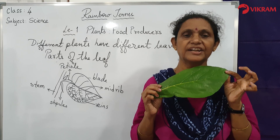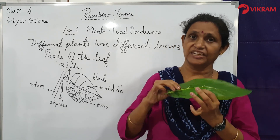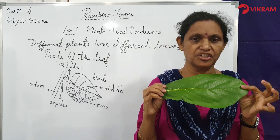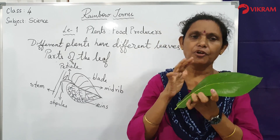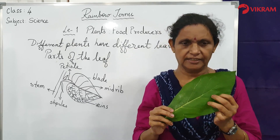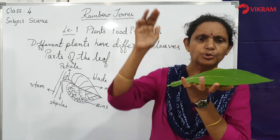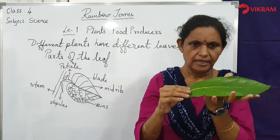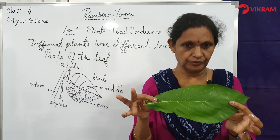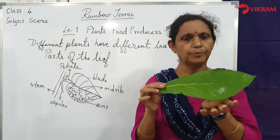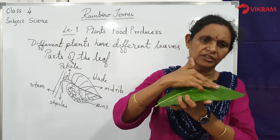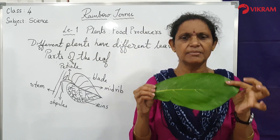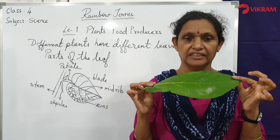Chlorophyll is a pigment found in the cells of the leaves, activated in the presence of sunlight, and is the substance that gives the plant its green color. Chlorophyll has the property of capturing light energy. Photosynthesis is the process by which plants make sugar from sunlight, water, and carbon dioxide. Sunlight enters through the top of the leaf and reaches the next layer of cells. The light energy is trapped by the chlorophyll and converted into chemical energy, which is stored in the leaves.